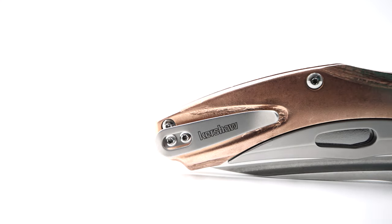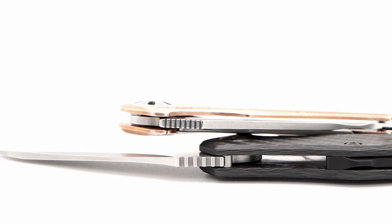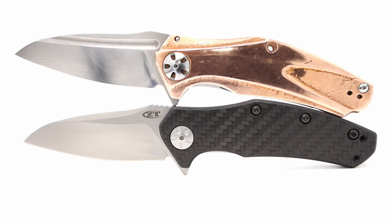And finally, the jimping atop of the 0770's spine is more functional and looks more appealing, just as with the ZT's handle appearance.